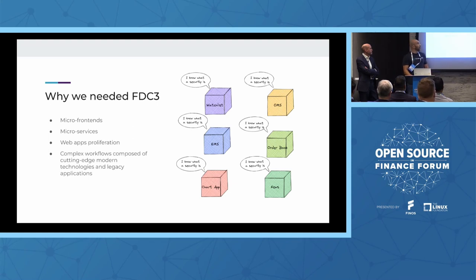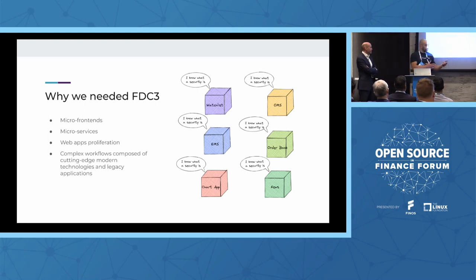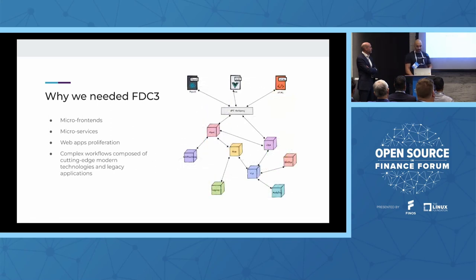Things have evolved. All the monoliths have been broken down into micro-applications. We now have micro-frontends, micro-services — some people would say micro-liths, but that's another discussion. There's also a proliferation of web applications because the tooling and technology is so good now. The industry also evolved, not as much as the technology, but now we have more feature-rich and complex workflows, composed of these modern web technologies and modern applications and, again, legacy applications.